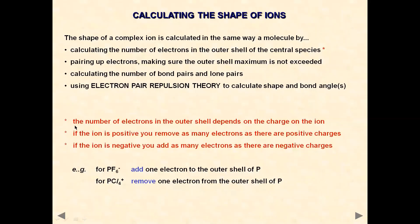It is important to know that the number of electrons in the outer shell depends on the charge on the ion. If the ion is positive, you remove as many electrons as there are positive charges. If the ion is negative, you should add as many electrons as there are negative charges. We are going to look at lots of examples on these.